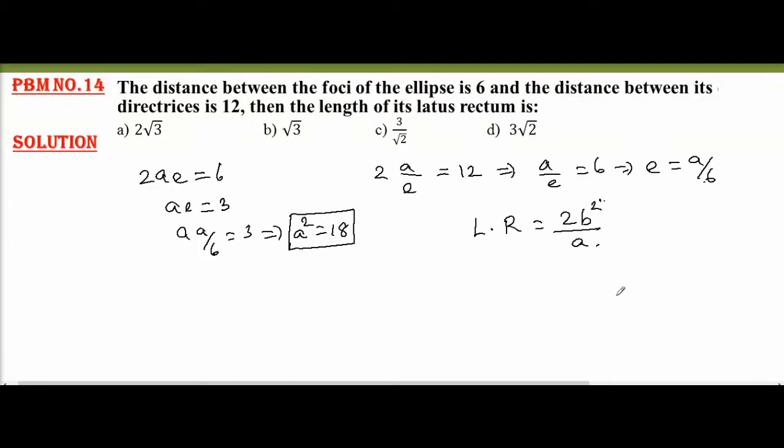So, now we'll write the relation between a² and b². In an ellipse, we have b² = a²(1 - e²). So, this can be written as a² - a²e².